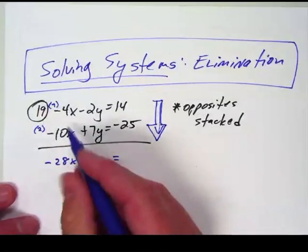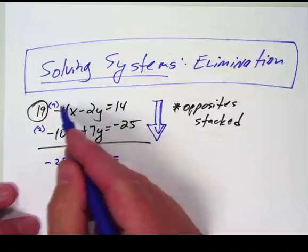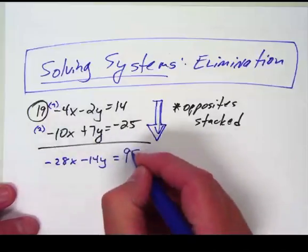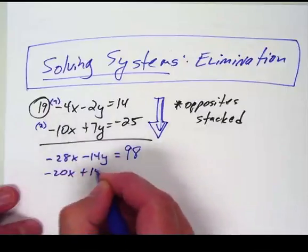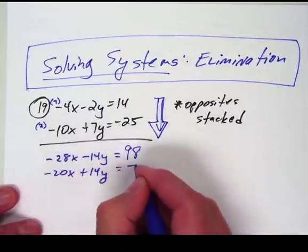So I multiplied this by 7 I had negative 28x. This by 7 I had negative 14y. This by 7 I had 98. And then this by 2 I have negative 20x. This by 2 I have 14y. And this by 2 I have negative 50.